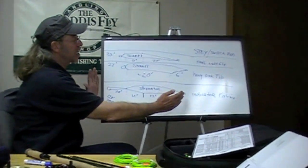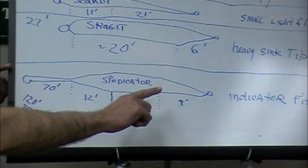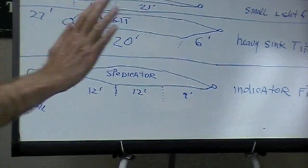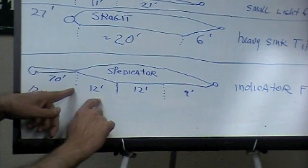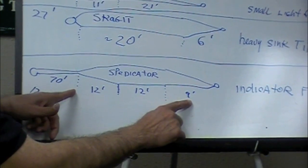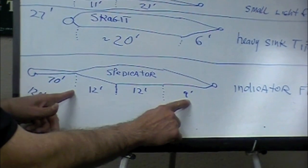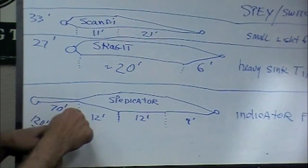So here's your speydicator. It's a 120-foot line that allows people to get absolutely amazing long dead drifts. The head section is 12 plus 12, roughly 34 to 35 feet long. That's longer than a Skagit, and it's tapered at both ends.